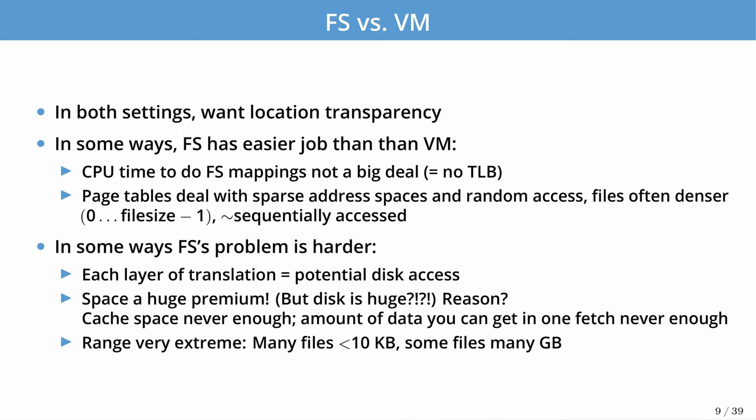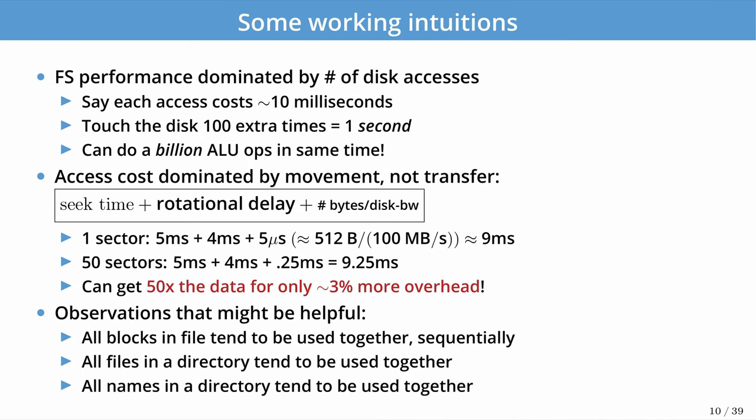Let's establish some working intuitions. File system performance is dominated by the number of disk accesses. If each access costs around 10 milliseconds and we access the disk roughly 100 times, that costs about one second. In contrast, a CPU might do billions of math operations per second in the same time it takes to do just 100 IOs.